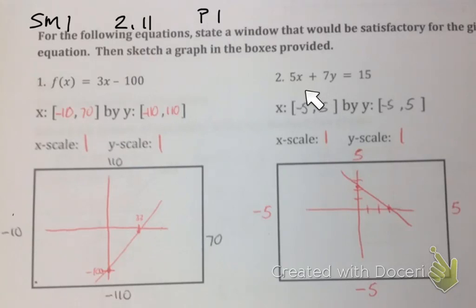Then over here on this one, I just went through and graphed it using intercepts. So when x was 0, y was 15 sevenths, and so I put a point there. And then when y was 0, x would be 3, and I put a point there. Through any two points there could only be one line. I drew my line.